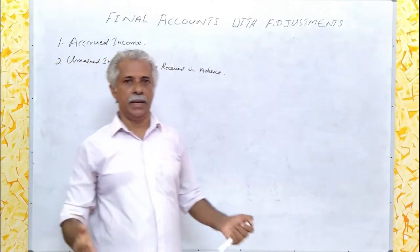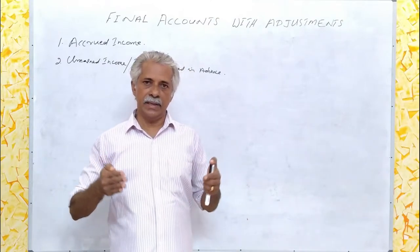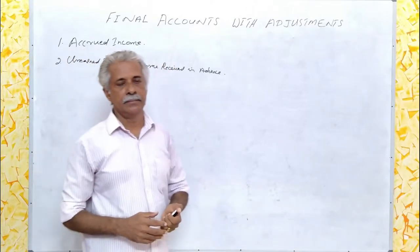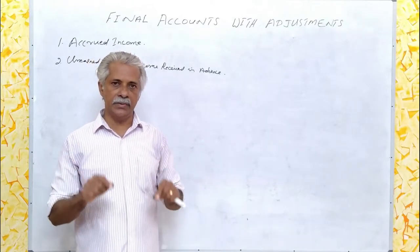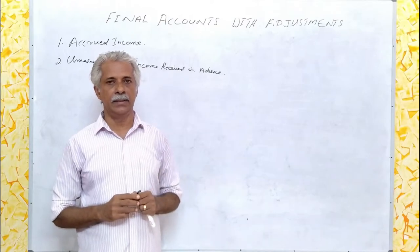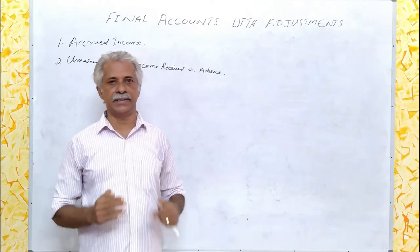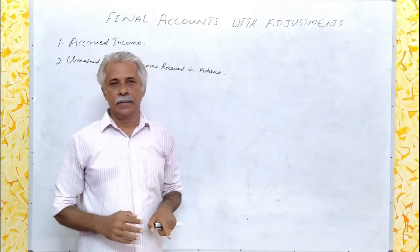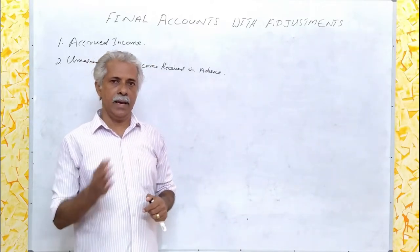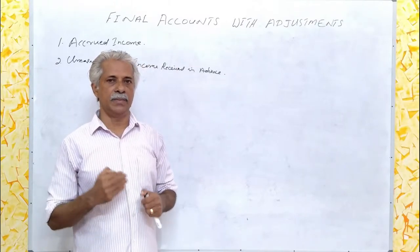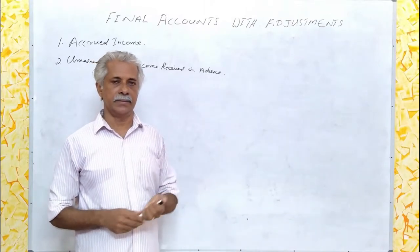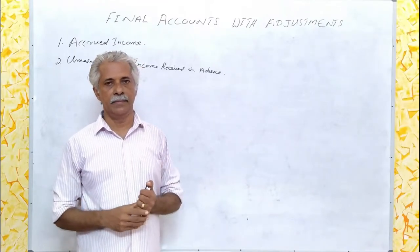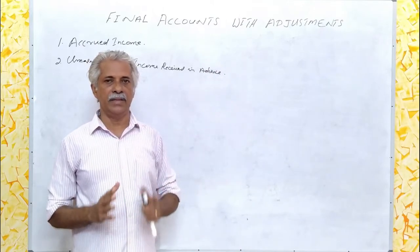What do we mean by accrued income? The income which is earned but not received — that is accrued income. Any income which relates to the current accounting period but remains unrealised is called accrued income. I shall illustrate it with an example.